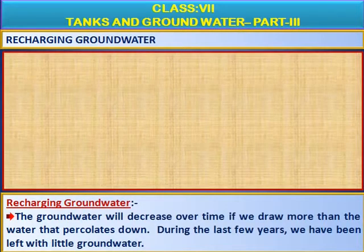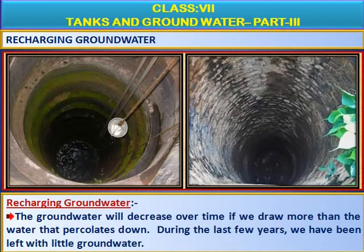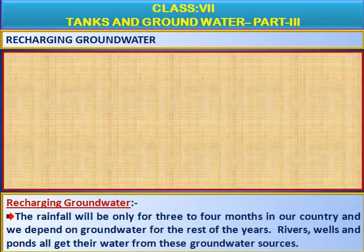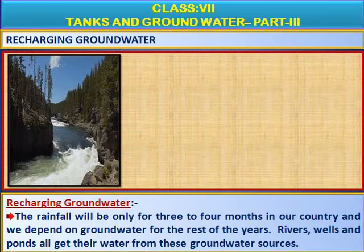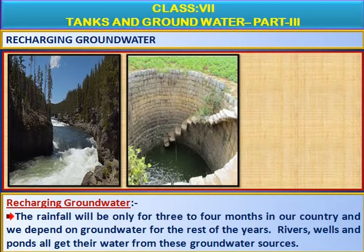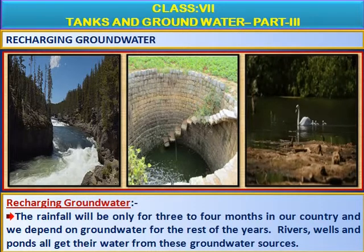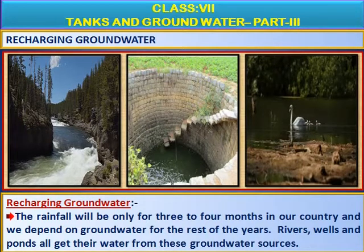The groundwater will decrease over time if we draw more than the water that percolates down. During the last few years, we have been left with little groundwater. The rainfall will be only for three to four months in our country, and we depend on groundwater for the rest of the year. Rivers, wells, and ponds all get their water from these groundwater sources. That's why, my dear children, we have to take steps to increase groundwater.